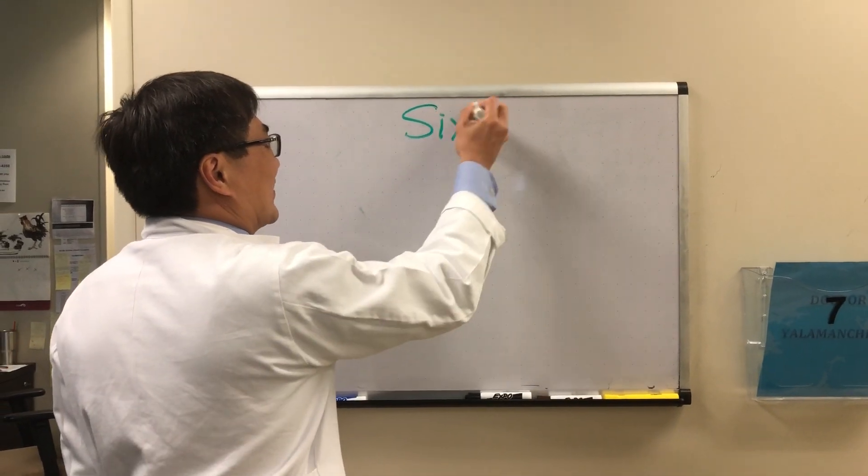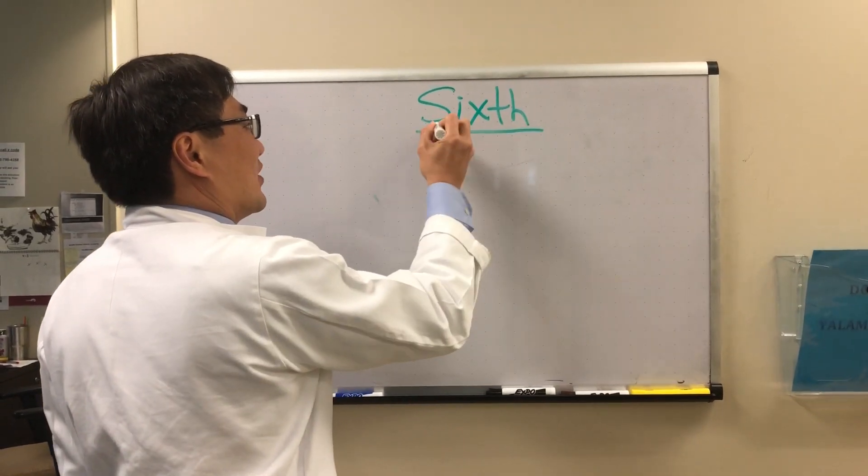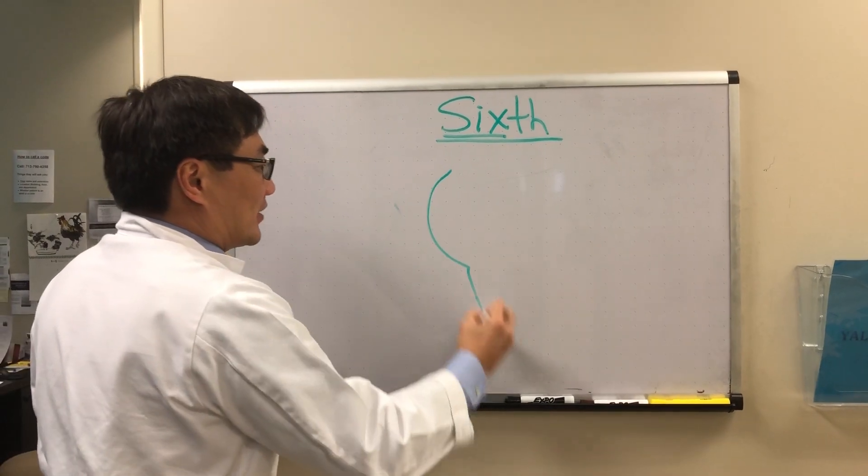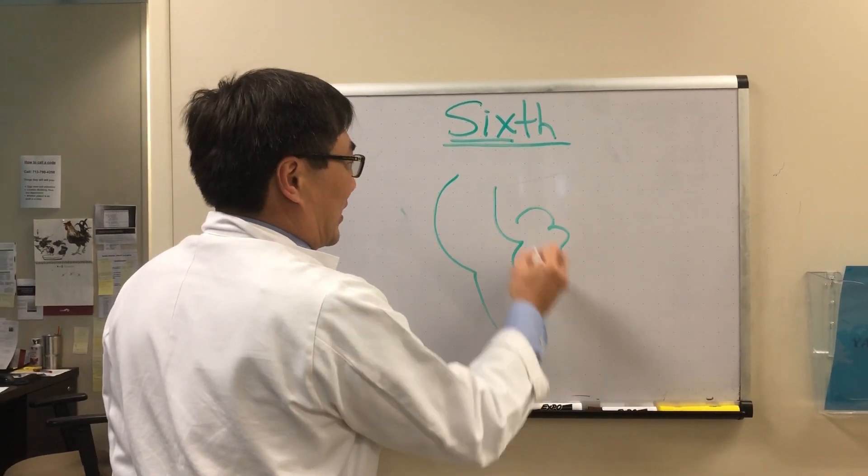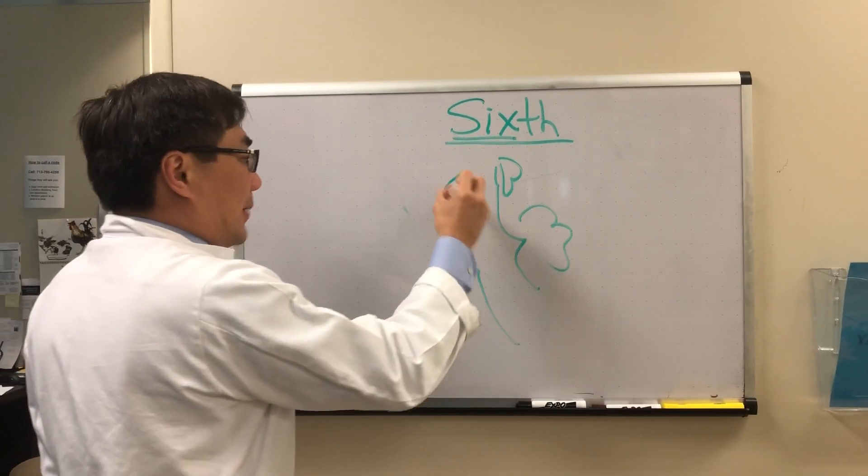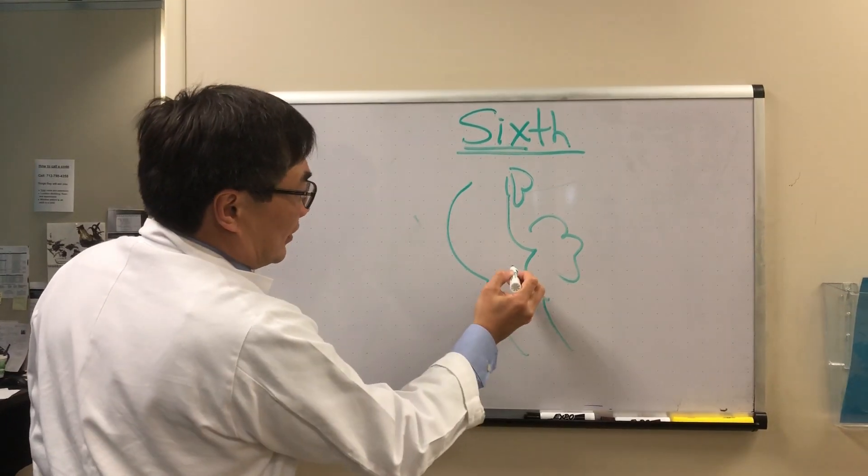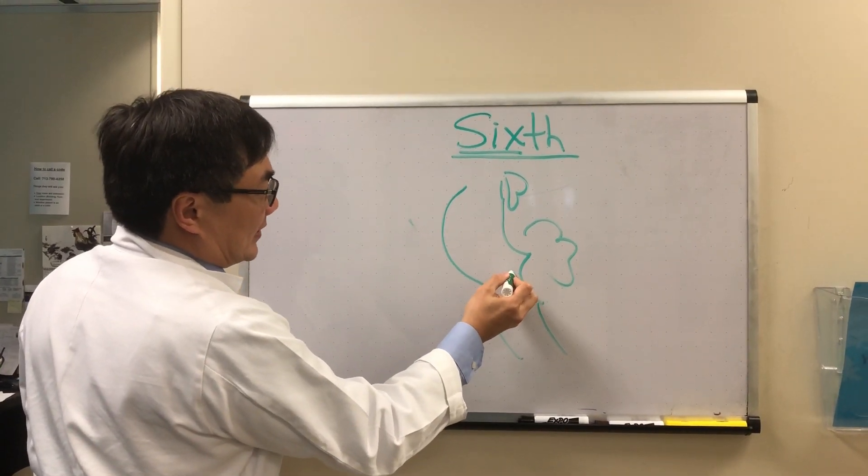Today we're going to talk about the sixth nerve and there are six syndromes of the sixth nerve. I'll just draw for you a quick diagram here of the pons. The sixth nerve begins as its nucleus